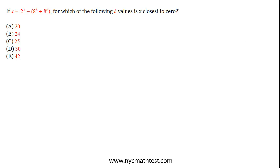Okay, so for which of the following b values is x closest to 0? So if x were 0, then you could add this term over. So what we're really trying to find out is when is 2 to the b closest to 8 to the 8th plus 8 to the 6th?